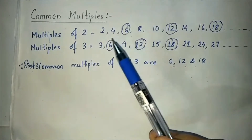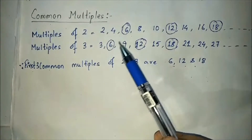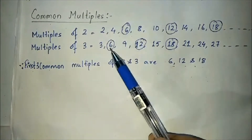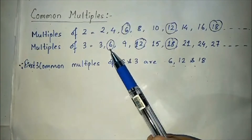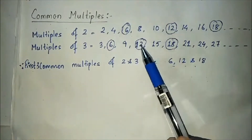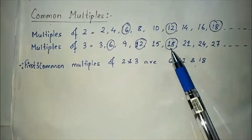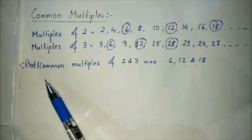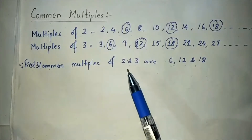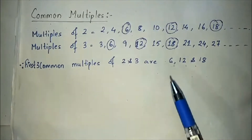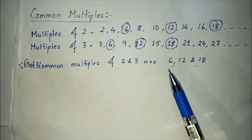Now you can see what the common multiples are. 6 and 6 is common, 12 and 12 is common, 18 and 18 is common. So the first 3 common multiples of 2 and 3 are 6, 12, and 18.